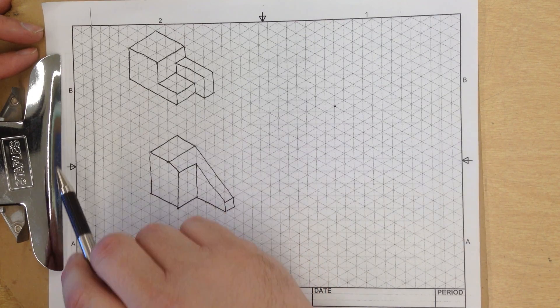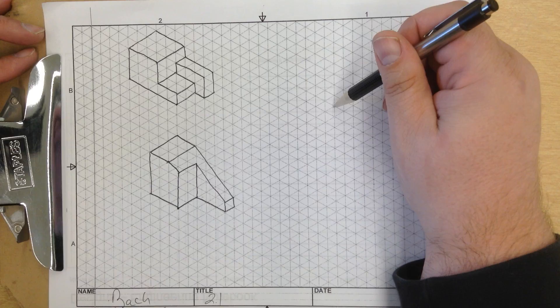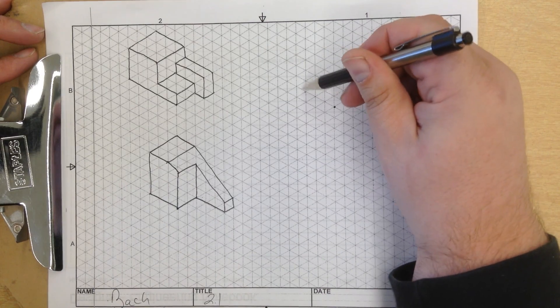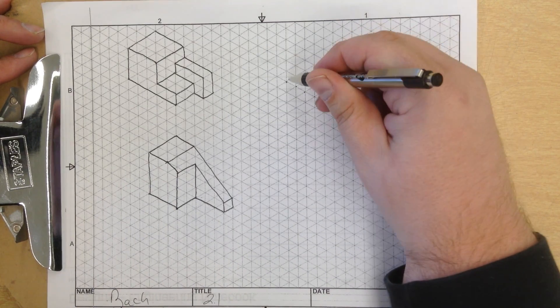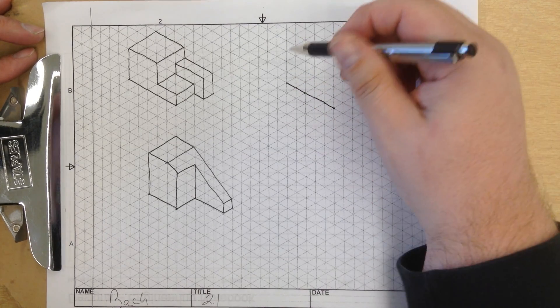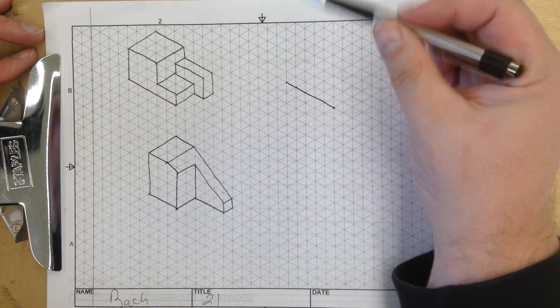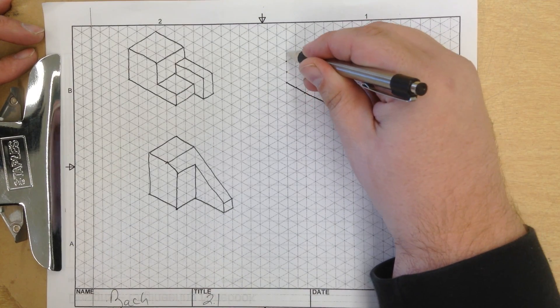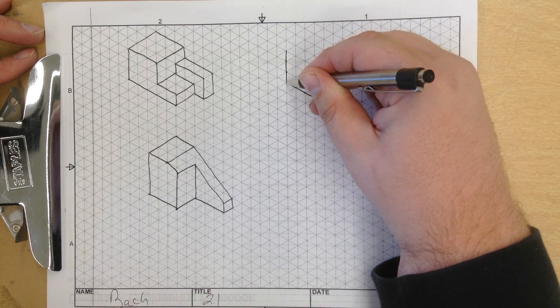Now if we look at this example, it goes 1, 2, 3, 4, 5 units over. So from my origin point, 1, 2, 3, 4, 5, and I'm going to connect the line. It goes 3 units up - 1, 2, 3 - and connect the line.